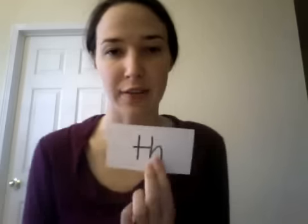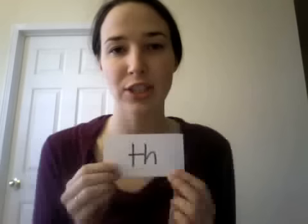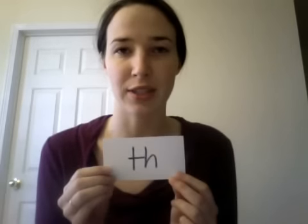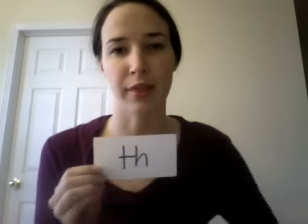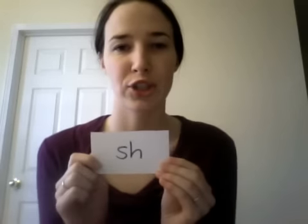As I mentioned in the last video, when we have one sound that we're representing with two letters, we call that two-letter pattern a digraph. So 'th' is a digraph that stands for the sound 'th.' An easier example: 'sh' is a digraph that stands for the sound 'sh.'